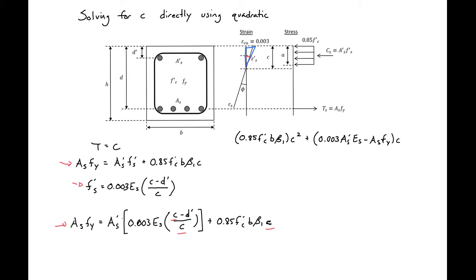And then we'll subtract 0.003 times As prime times Es times D prime, and all of this is equal to 0.